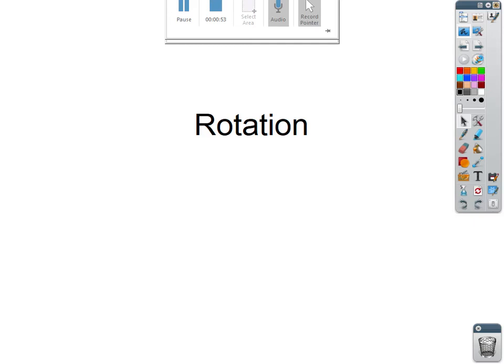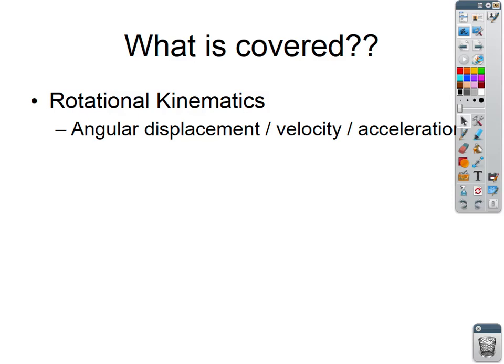This initial page is just showing you what we're going to cover in this unit and in my other videos. We're going to look at rotational kinematics — what's called angular displacement, velocity, and acceleration. The word angular and the word rotational are basically synonyms; they are interchangeable. We could call it rotational displacement, rotational velocity, or more specifically angular displacement, velocity, and acceleration.